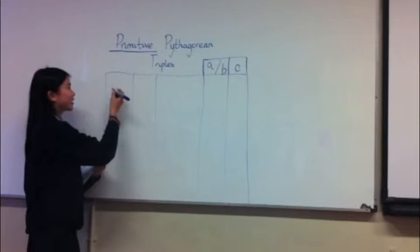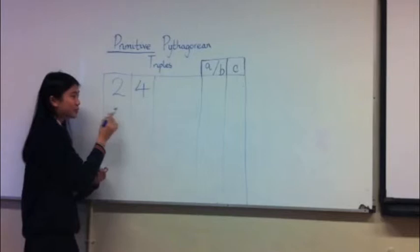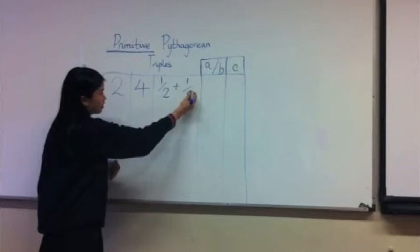What you have to do is take the first two numbers, so that would be 2 and 4, and then take the reciprocal of these two numbers and add them together. So you'll have half and a quarter, and the answer would be 3 quarters.